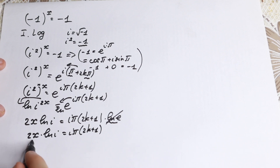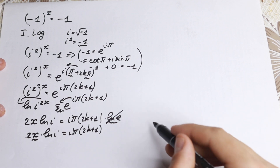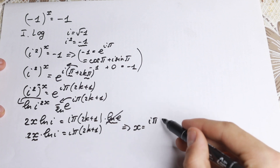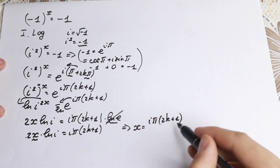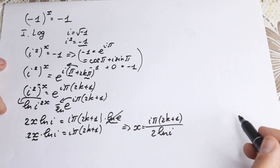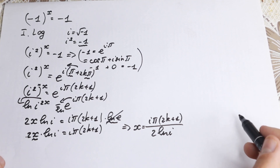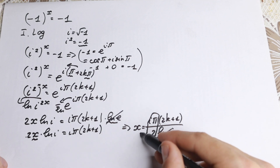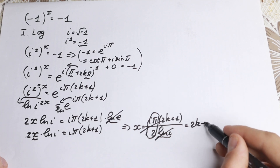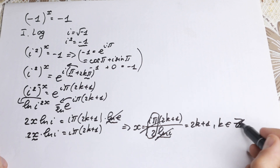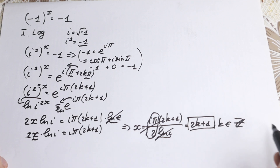Now we solve for x by dividing both sides by 2·ln(i). So x equals i·π·(2k+1) divided by 2·natural log i. If you know complex numbers, we can cancel i·π/2 from numerator and denominator, and as a result x equals 2k+1, where k is an integer.